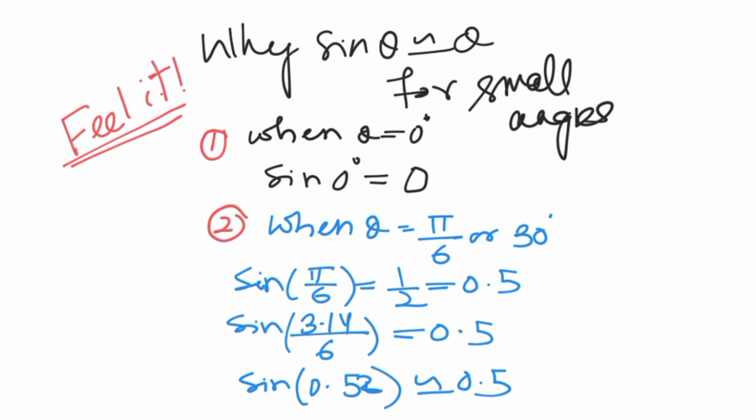When theta is equal to 0, 0 is the smallest angle. See, sin 0 is equal to 0, as you can see.